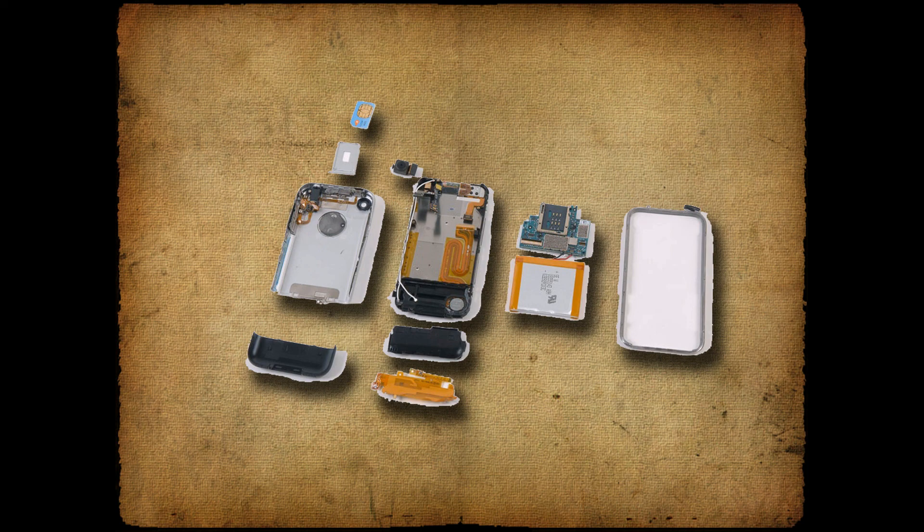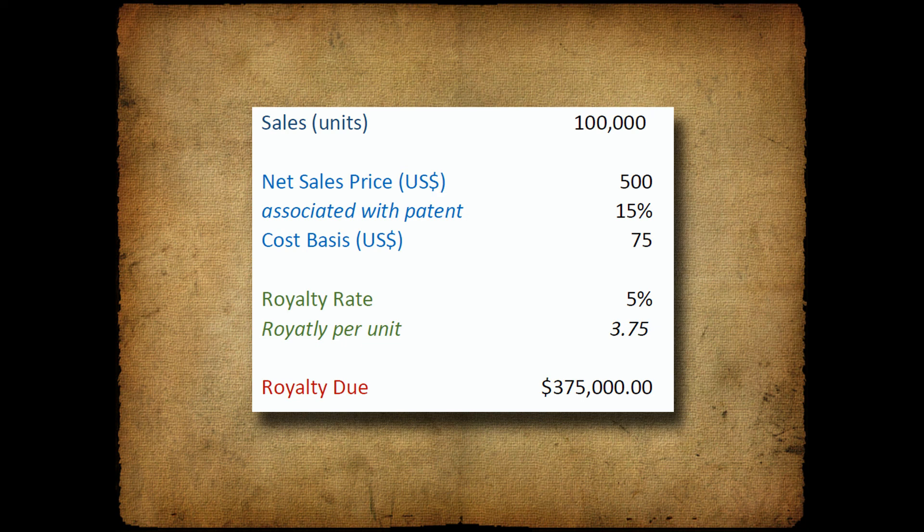In this example, I use 15% of the net sales price being associated with the patent. This can be done in a number of ways — for example, if one knows the actual specific component price, such as the price of the GPS antenna, that number can be used instead of an estimate. Together, the net sales price and the percent associated with the patent create the cost basis for the royalty.